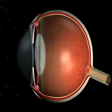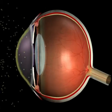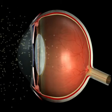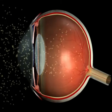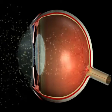First, the cornea, located at the front of the eye. Then, the crystalline lens behind the pupil. Then, the vitreous body in the middle of the eye.